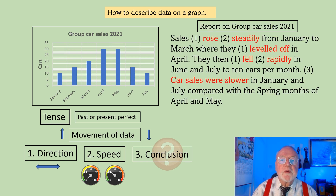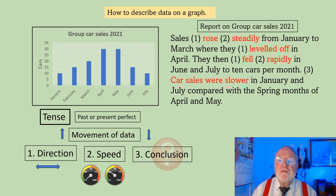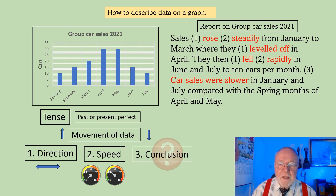Here's a typical report which you could write about this graph. Sales rose steadily — 'rose' is the direction, 'steadily' is the speed — from January to March, where they leveled off in April. They then fell rapidly in June and July to 10 cars per month. I can now draw a conclusion: car sales were slower in January and July compared with the spring months of April and May.